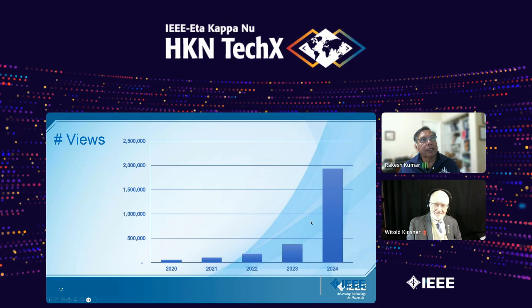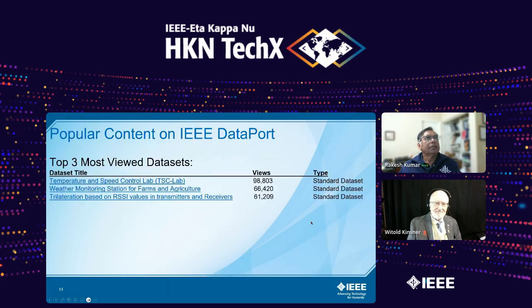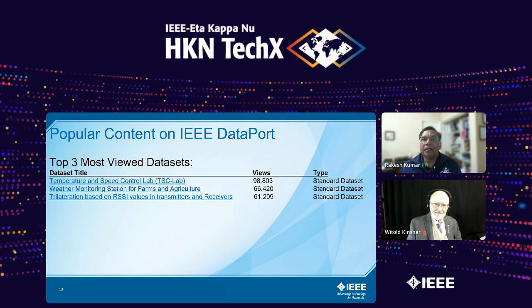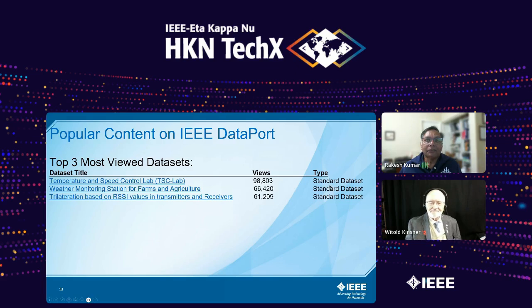What is the most popular content? The top three viewed data sets include temperature and speed control in a lab with almost 100,000 views, a weather monitoring station for farms and agriculture, and trilateration based on RSSI values for wireless transmitters and receivers. You can get a lot of visibility for your data set.